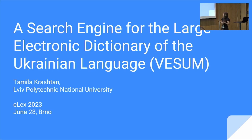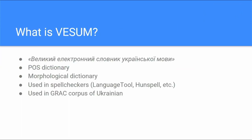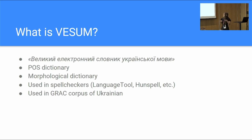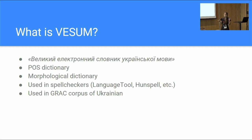First of all, what is this electronic dictionary, or VESEL as I'm going to refer to it? VESEL is a direct transliteration of an acronym of the Ukrainian name for the dictionary. It is a part-of-speech dictionary that provides morphological information — lemmas, word forms, and tagging for part of speech. This dictionary is used in some software, in particular spell checkers like LanguageTool and Hunspell.